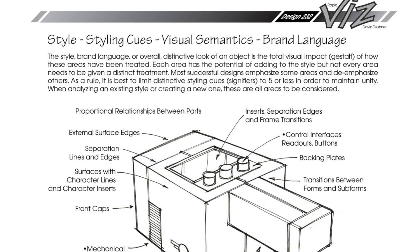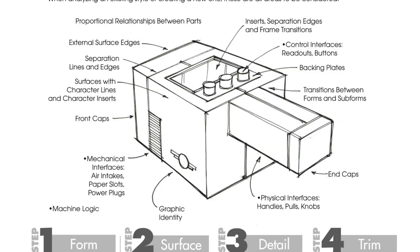When analyzing an existing style or creating a new one, these are all areas to be considered. Let's look at the different aspects we should focus on while sketching and designing the product, all related to styling, brand language, and surfacing. A huge one is proportional relationships between parts - understanding the different sizes and scale of each part so when you put them together, it looks good and harmonious.